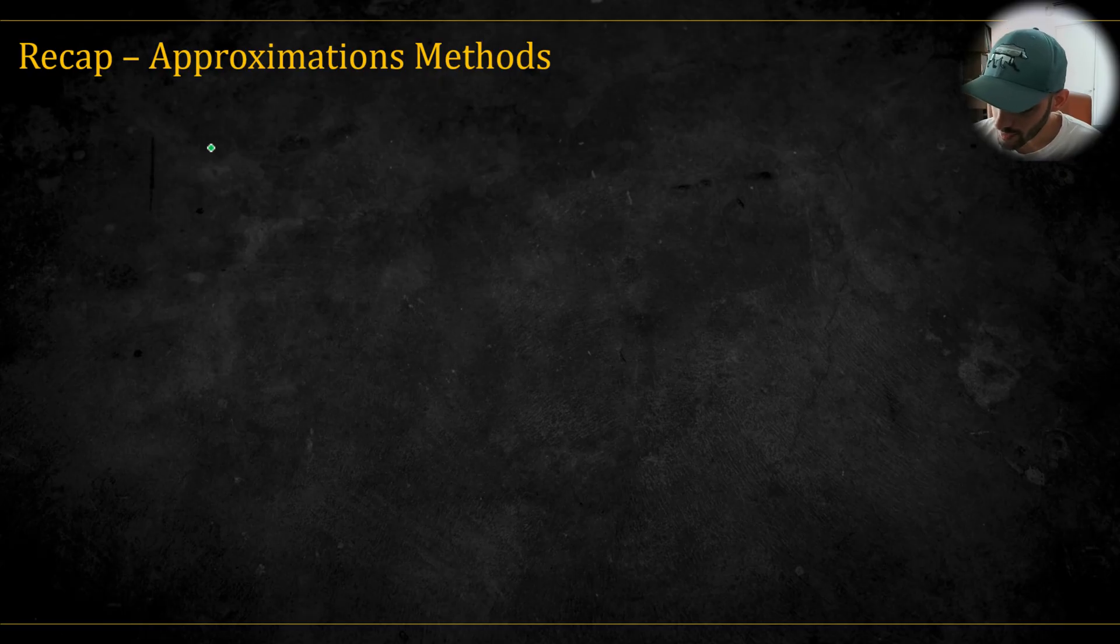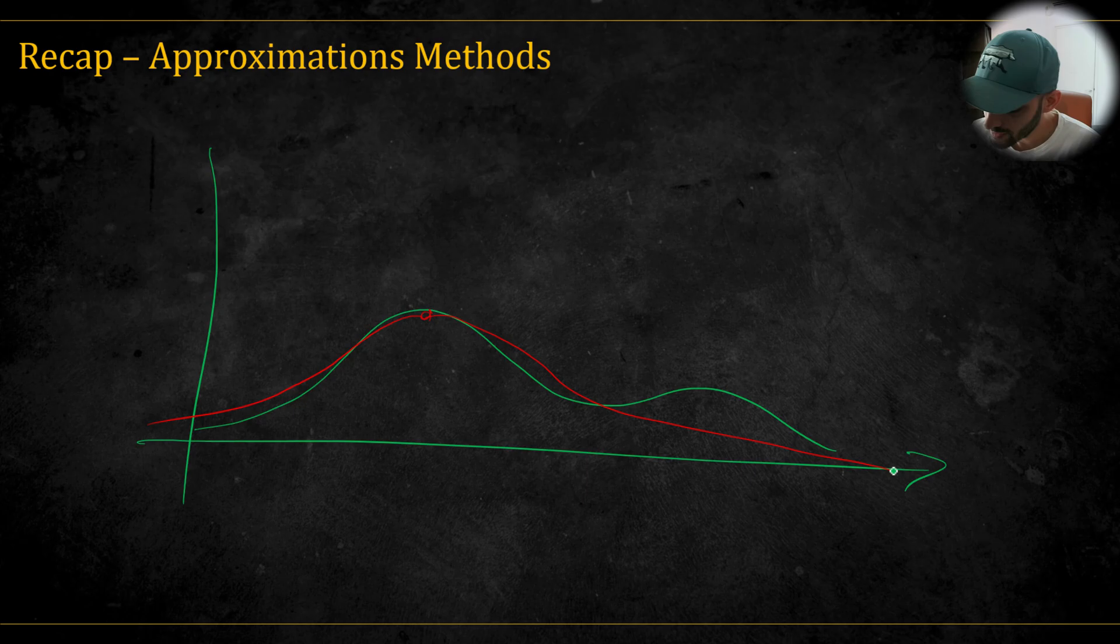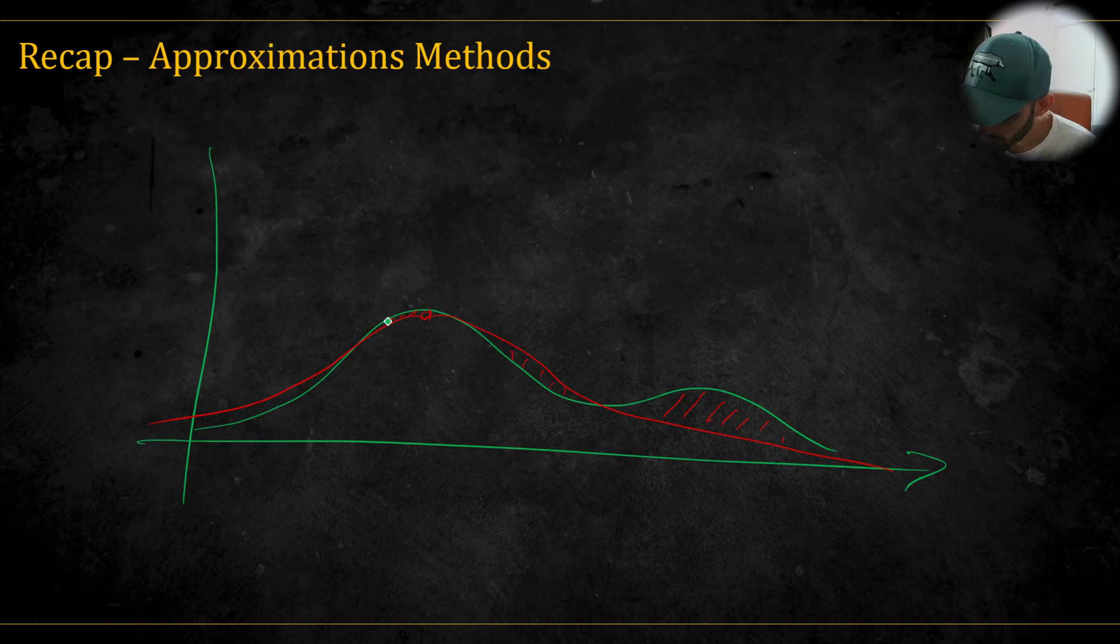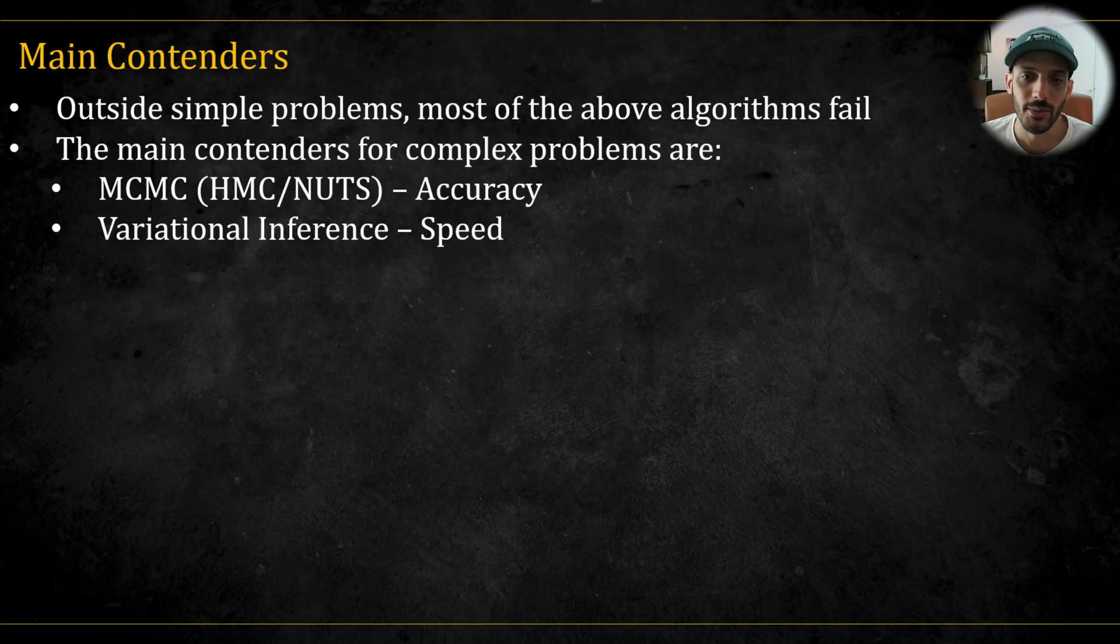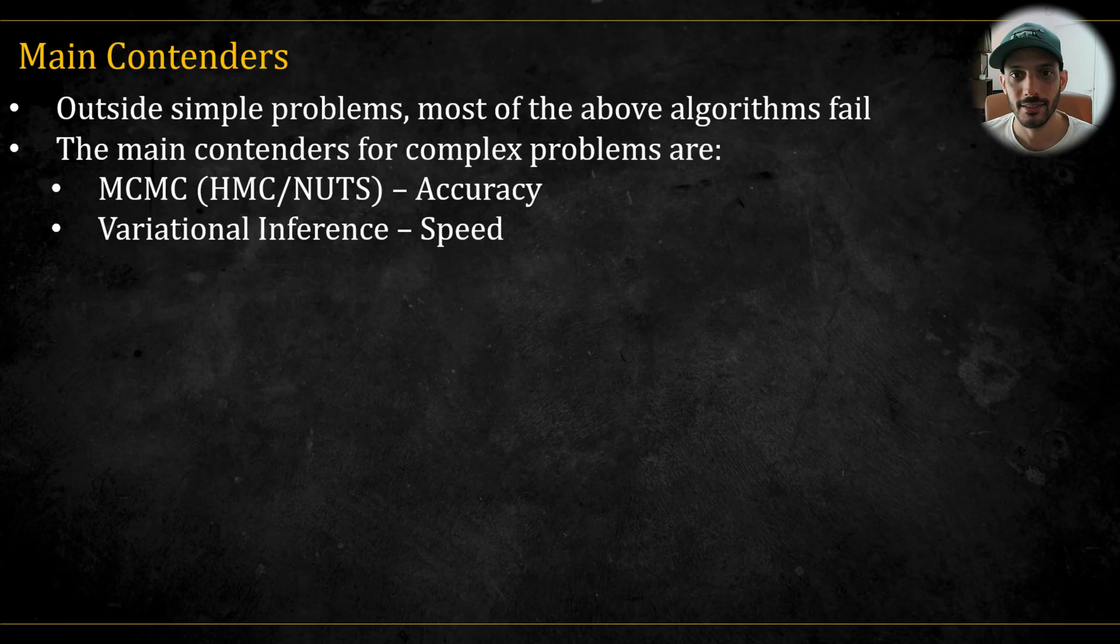Finally, approximation methods. Again, we have this unnormalized distribution. I'm going to talk about the simplest one, which is the Laplace method. It simply finds the mode of this distribution and fits a Gaussian to it. Of course, we are off at certain places, but sometimes we think it's good enough. It's a quicker, dirty approach, and sometimes it's good enough. This is a simple method, but there's also more advanced methods. In variational inference, you can fit more complex functions, for example, using neural networks. But the problem with all of these methods is that they are too simple and can't really handle complex problems in the real world. The main contenders for complex problems are MCMC and variational inference, with MCMC's main strength being accuracy and variational inference's main strength being speed.